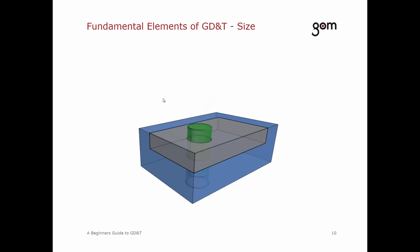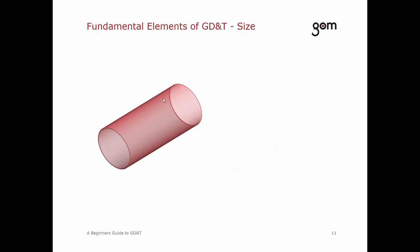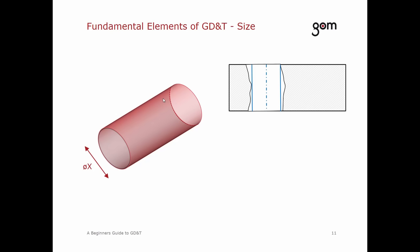Let's have a closer look at the size of elements. Think about the function of the borehole on our part — the bolt should go through our borehole, so it must have a certain size to ensure the bolt fits through. Imagine you have an inner cylinder. The bolt must fit through the borehole at any point. If the borehole is simply too small, the bolt cannot fit through. So it is important to determine the minimum diameter to find the smallest hole of the borehole. This means that data must be available for the entire cylinder barrel and the element needs to be captured entirely, regardless of your measuring system.